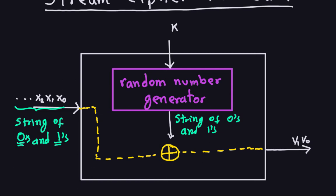If you don't recall what that is, I invite you to go ahead and watch the videos on the stream cipher. One of the reasons we spent so much time looking at random number generators is because that is the big part of this. The XOR operation itself is simple, and printing out the result is also simple, so the only thing we have to worry about is the random number generator.